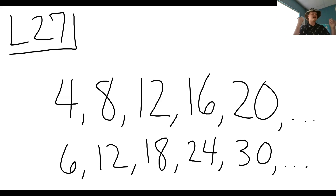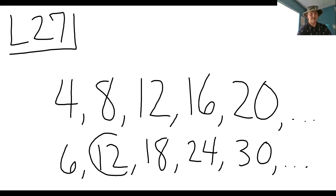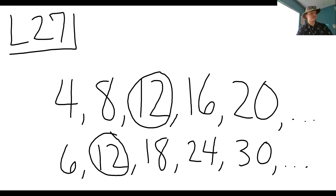So what we're finding is the least common multiple. Let's see what we have in common. We have a 12 in common with four and six. The least common multiple of four and six would be 12 because it is the smallest number that they have in common.